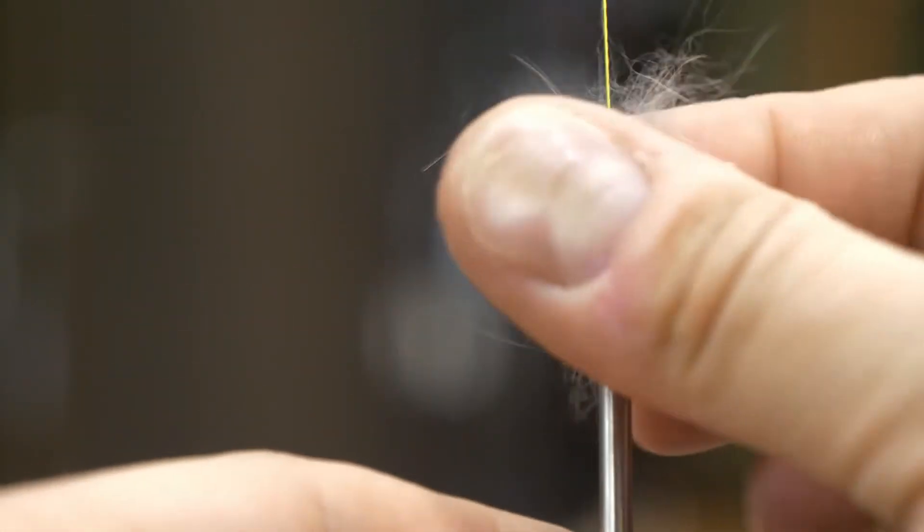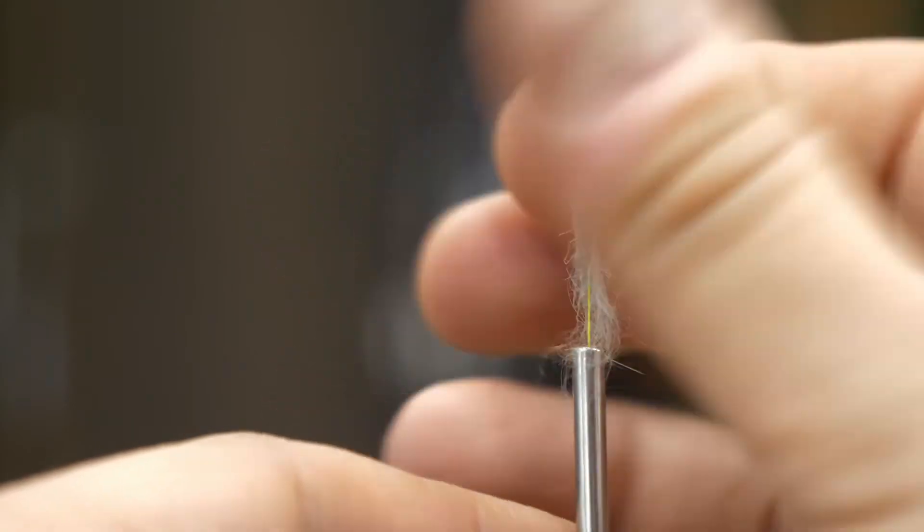This is a beginner mistake - a lot of people like to put the dubbing on way too thick. They try to spin on big clumps and that's not going to give the results you want.